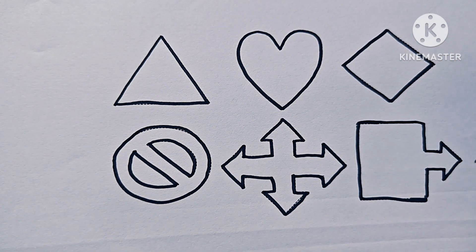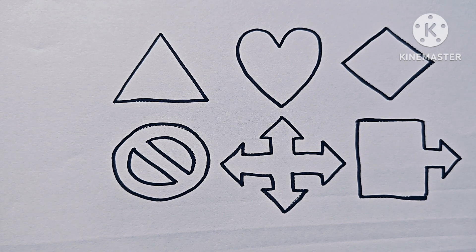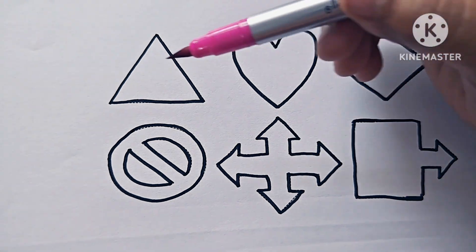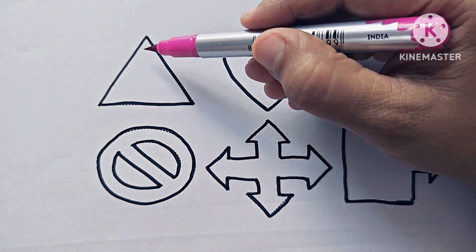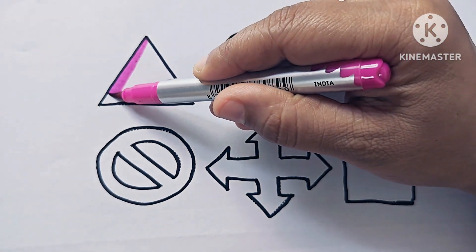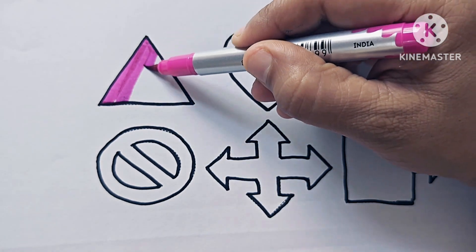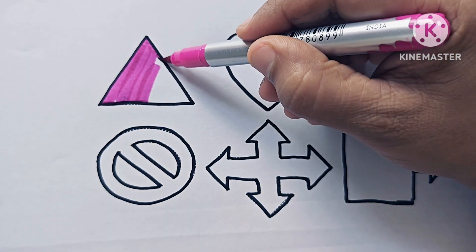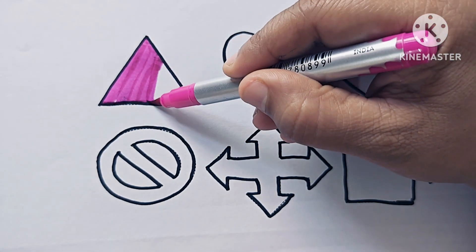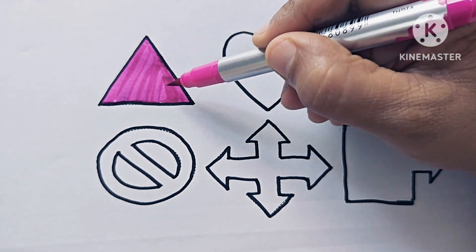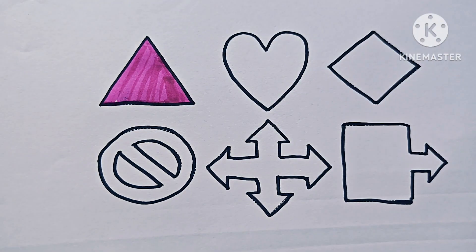Now, let us color these shapes and symbols. This is pink color. This is the triangle shape, and the color is pink.